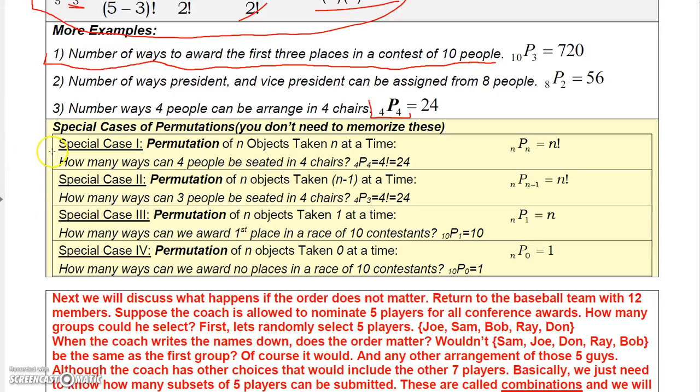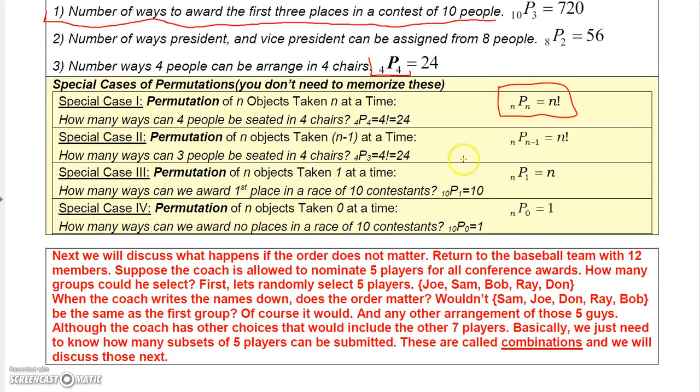Now, there are some special cases of permutations, but you don't need to memorize them. You already know that nPn is n factorial, but actually, so is nP(n minus one). If you said, 4P4 is going to be 24, but it turns out that if you calculate 4P3, that's also going to be 24.